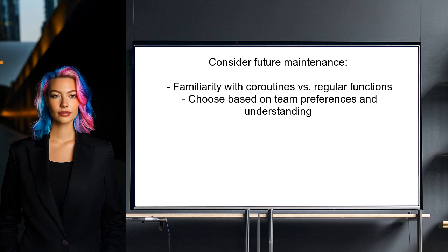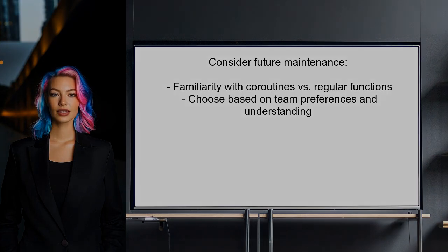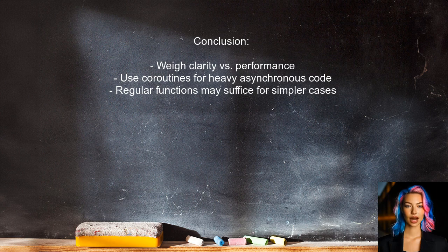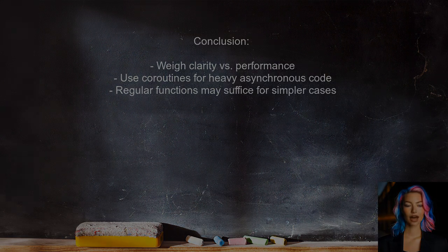However, if developers prefer simpler functions, the regular function approach might be better. While the coroutines version may have a slight performance penalty, the difference is not drastic — the regular functions version performed faster in tests. If the codebase is heavily asynchronous, sticking with coroutines may be beneficial; otherwise, regular functions could suffice.